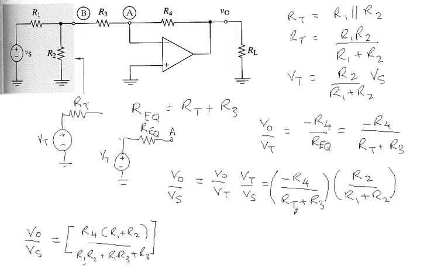Substituting RT with the relationship comprising R1 and R2 that we found earlier, we have V0 over Vs equals R4 times R1 plus R2 divided by R1 R2 plus R1 R3 plus R2 R3, times R2 R1 plus R2.